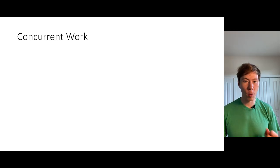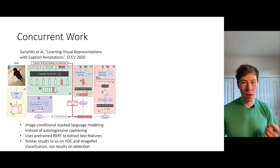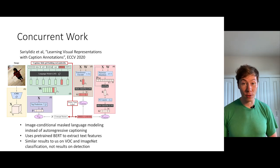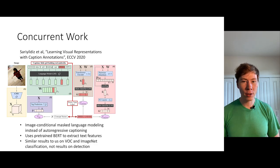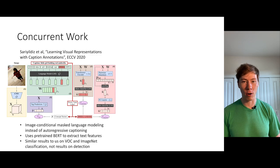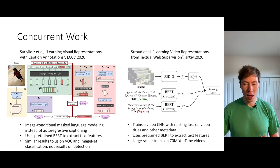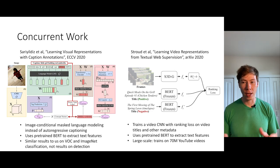I'd also like to briefly point out a couple of pieces of concurrent work using ideas very similar to ours. There's another paper at this ECCV with a very similar approach — the basic differences are that they use an image-conditional masked language model rather than an autoregressive captioning objective like we do, and they use a pre-trained BERT model to extract language features, whereas we learn all of the language transformer stuff jointly with the rest of the model and don't rely on any external text data. They have pretty similar results to us on VOC and ImageNet classification, but don't show results on detection or long-tail recognition. Another really cool piece of concurrent work from Stroud et al. takes a similar approach on video, also relying on pre-trained BERT, training on up to 70 million YouTube videos, and getting pretty good results on downstream video recognition tasks.